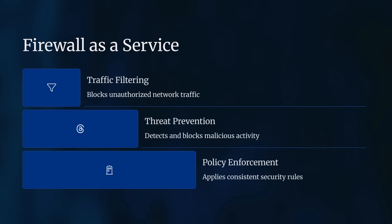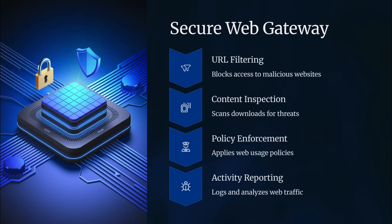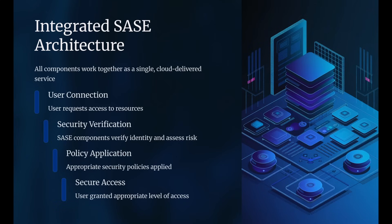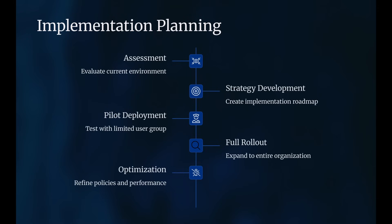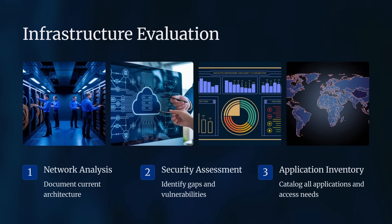This approach helps organizations apply secure access to users, workloads, devices, and applications in remote and hybrid environments. Tutorials often break down SASE components piece by piece, including: one, zero-trust network access; two, firewall as a service; three, cloud access security broker; four, secure web gateway; and five, software-defined wide-area network. These components work together to provide comprehensive security and networking capabilities in a single cloud-delivered service.